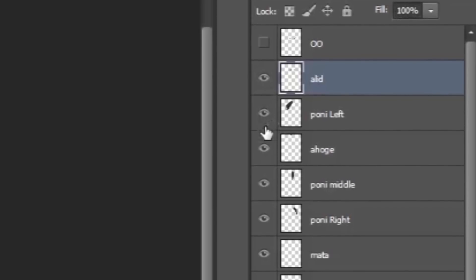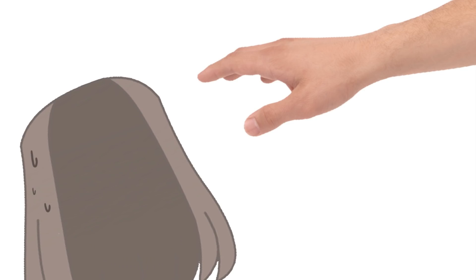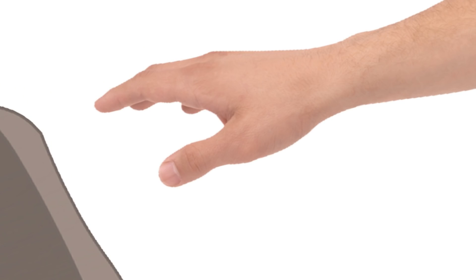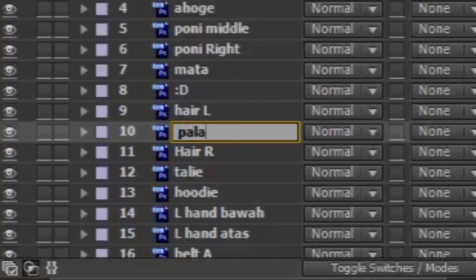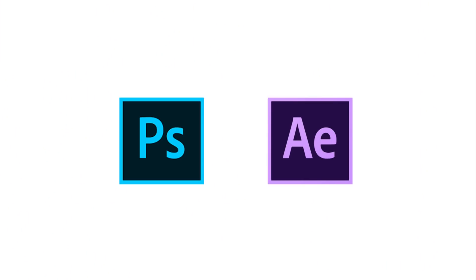Step 1: Separate the hair part. You can do it like this. As for a big part, separate it too, because if you don't, it may look awkward. You can use any software or application you have, as long as it's a transparent PNG. I suggest you rename the layer — you can do it in Photoshop or in After Effects.